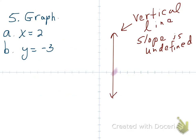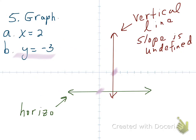What about y equals negative 3? That's going to be a horizontal line going through the point where y equals negative 3. What about its slope? Hopefully you're saying that one's 0, because horizontal lines always have a slope of 0. That is it for this summary — we are done.